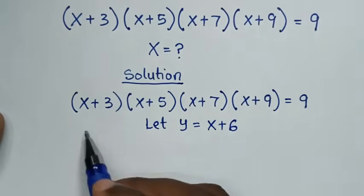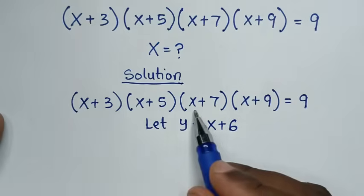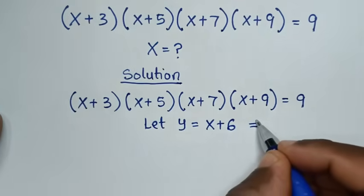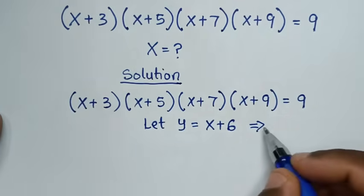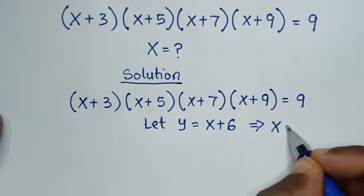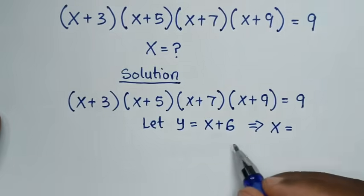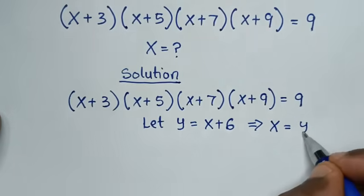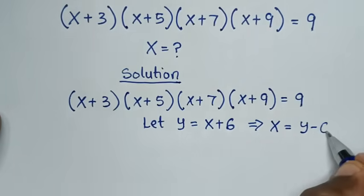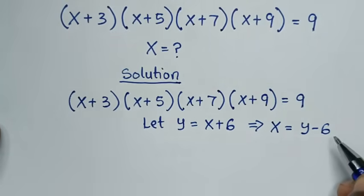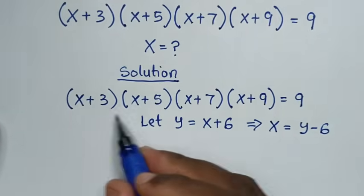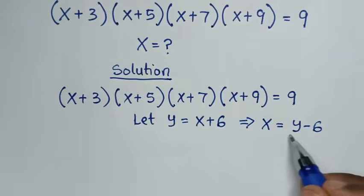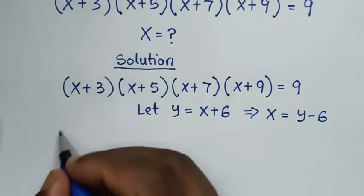Then, substituting into the positions of x, since y = x+6, we get x = y−6. So into all positions of x, we substitute y−6.